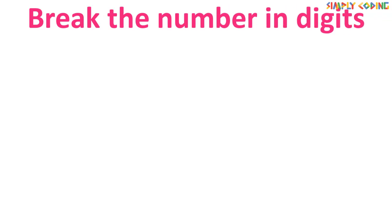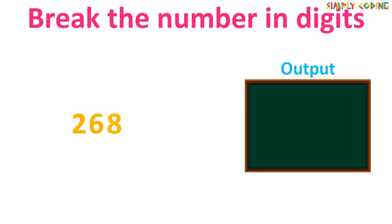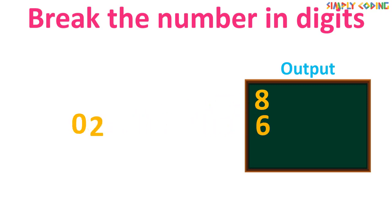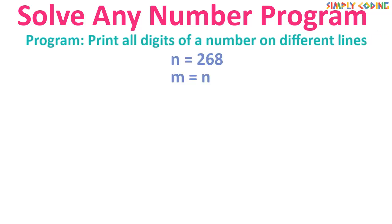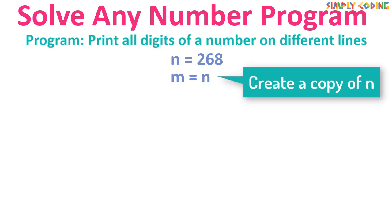Let me explain the logic. Suppose our number n is 268. We will extract the rightmost digit of the number and continue to cut out digits one by one until the number becomes zero. First, make a copy of the number — because when we cut digits out we end up making n equal to zero, which creates a problem if we need it later for comparison. So we will work with the copy m to extract the digits.